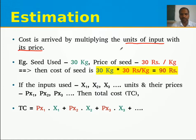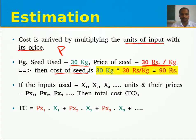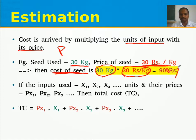For paddy production, we use seed at 30 kg per acre and the price of seed is 30 rupees per kg. So the cost of seed is 30 kg × 30 rupees per kg = 900 rupees. That is the expenditure incurred for purchase of seed.